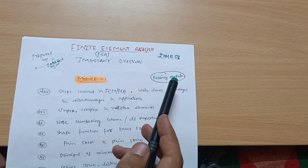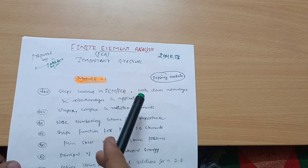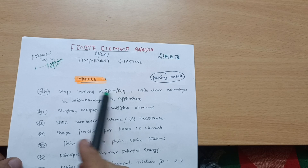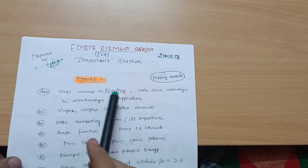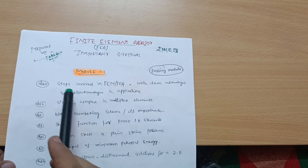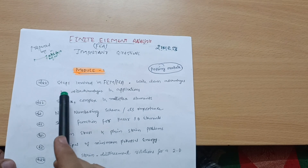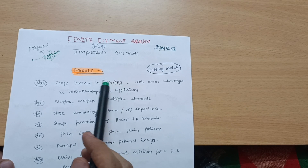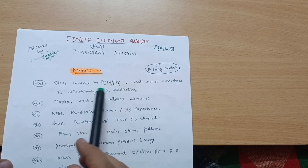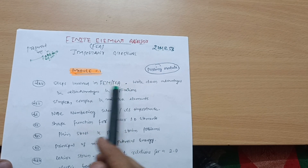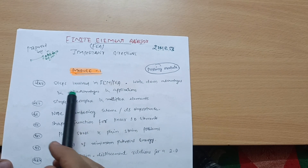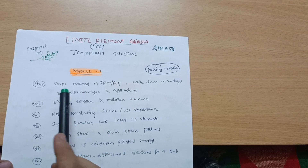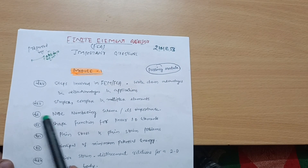Module 1 is the passing module in which you can easily cover 20 marks. I am assuring you, without attending the problems in Module 1, you can easily score 20 marks. Important questions include: what are the steps involved in FEM or FEA — finite element method, finite element analysis — and write down advantages, disadvantages, and applications of FEA. This is the most important, super important question.